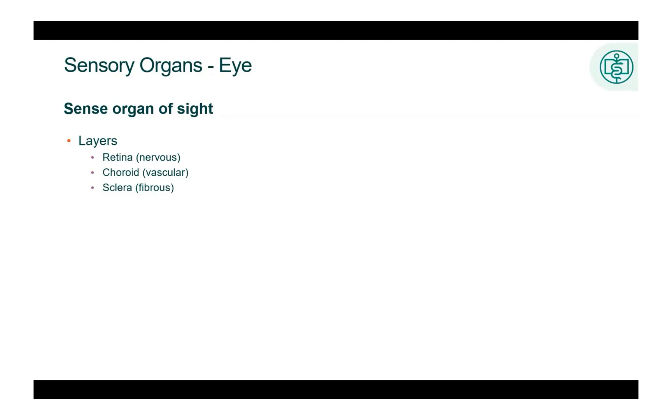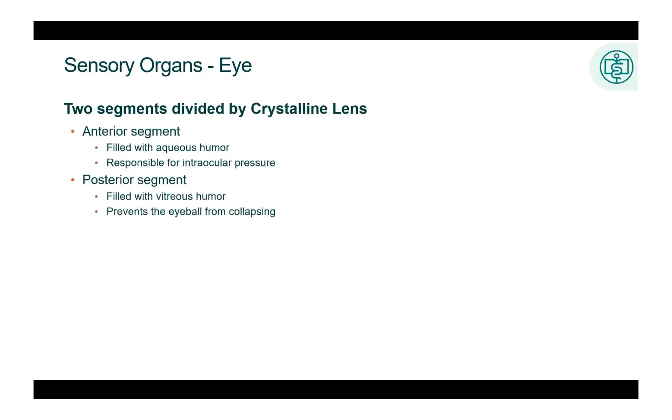The eye is the sense organ of sight. The eyeball is made up of three layers. The innermost layer is the retina. The middle layer is the choroid. And the outermost layer is the sclera. The eyeball is separated into an anterior segment filled with aqueous humor and posterior segment filled with vitreous humor. The crystalline lens separates the two segments. The aqueous humor is responsible for the intraocular pressure in the eye. The vitreous humor shares in the responsibility for the intraocular pressure, but also prevents the eyeball from collapsing.